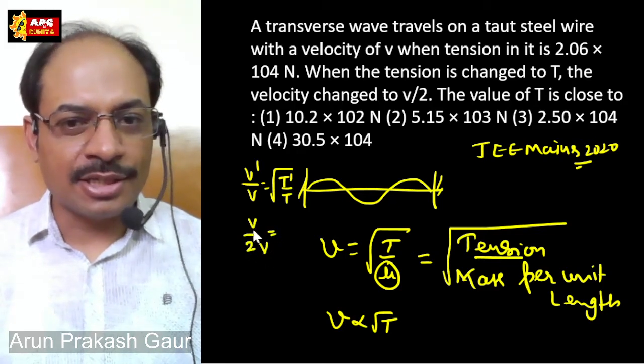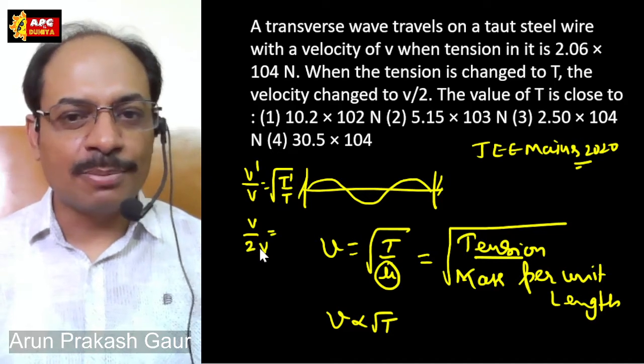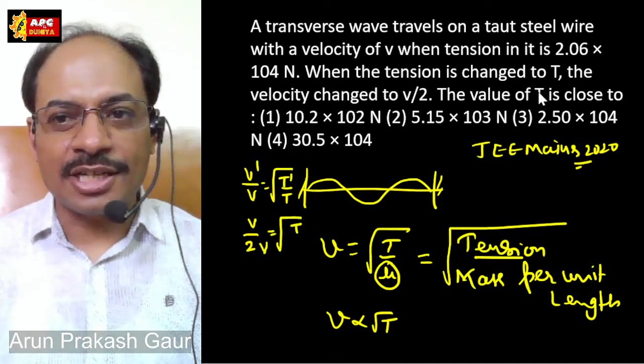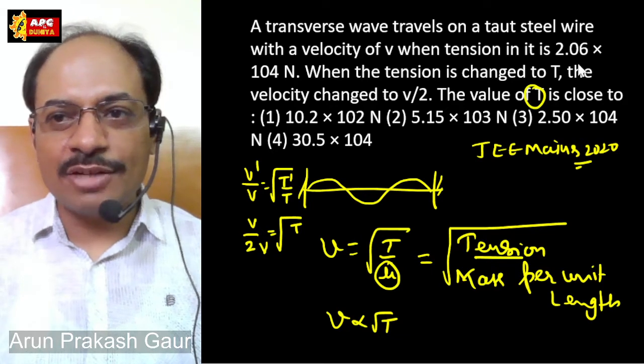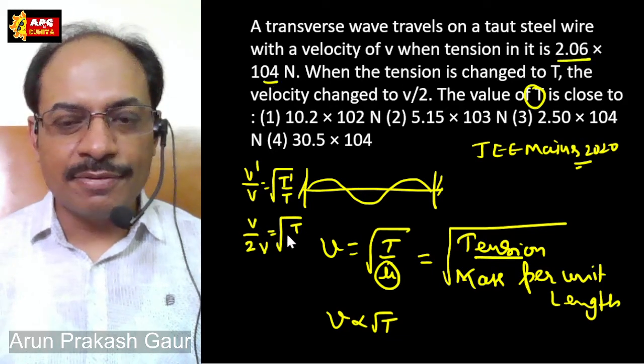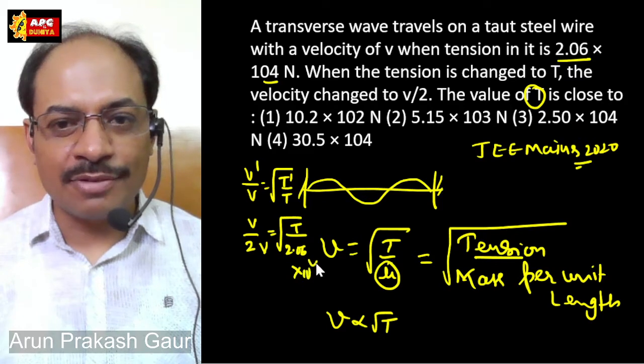The new velocity is V by 2. The new velocity is V by 2. The new velocity, naya tension, the tension is T. The question is T. The prior tension is given. The value is 2.06 into 10 to power 4.